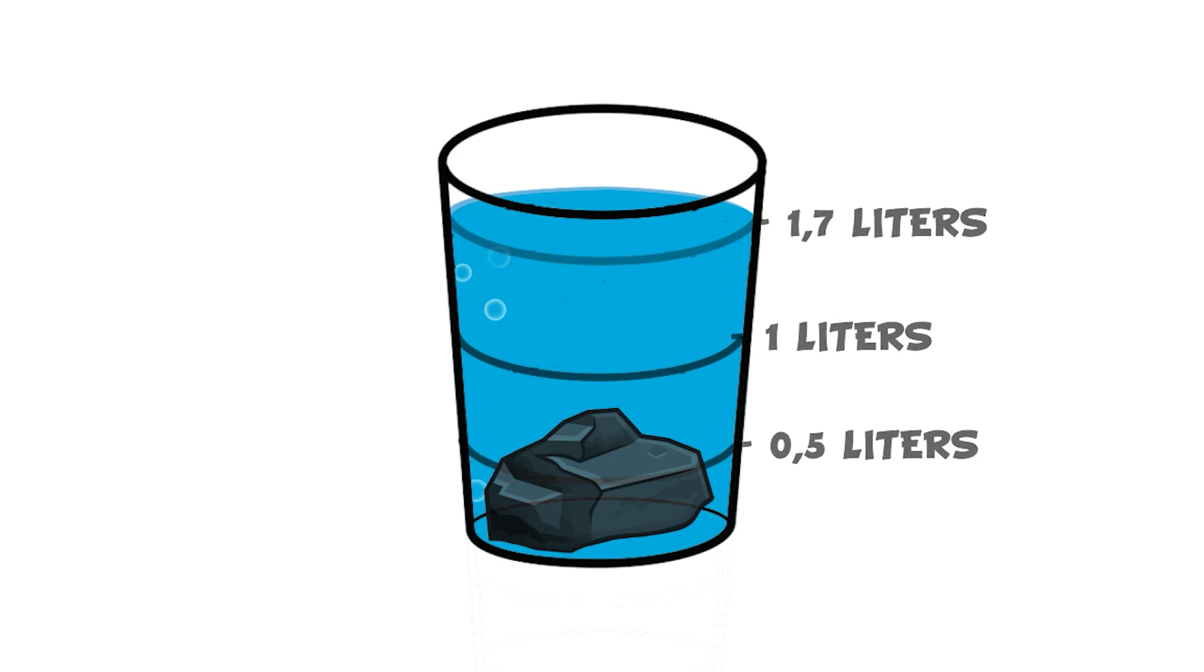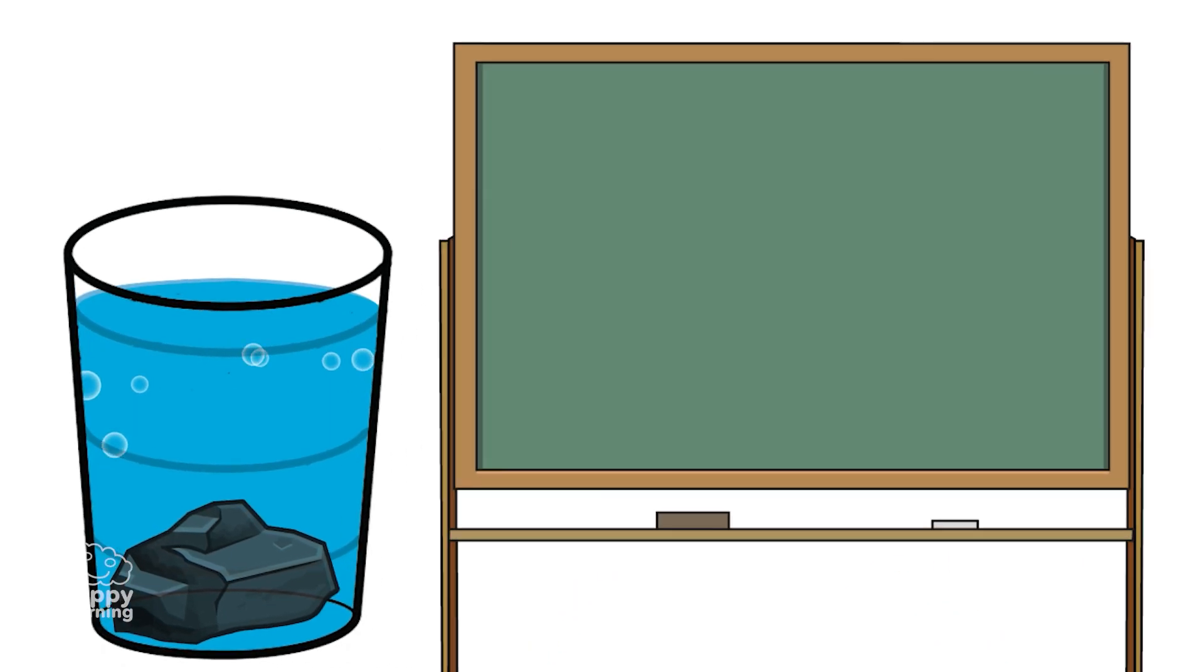Now, we must subtract this new measurement to that of the litre of water which we had at the beginning, meaning 1.7 minus 1.0, and the result is the stone's volume, meaning the stone has a volume of 0.7 litres.